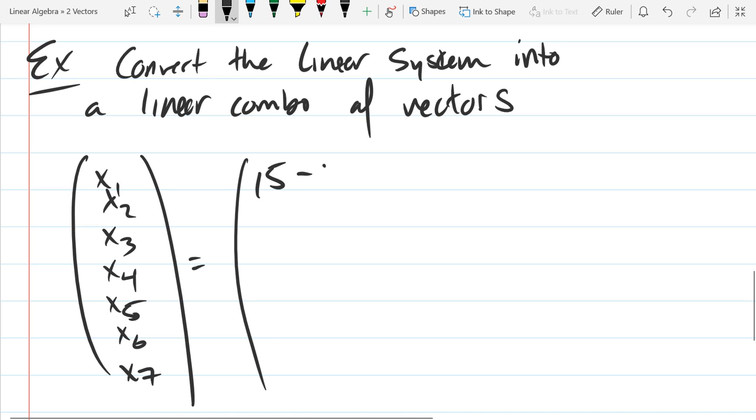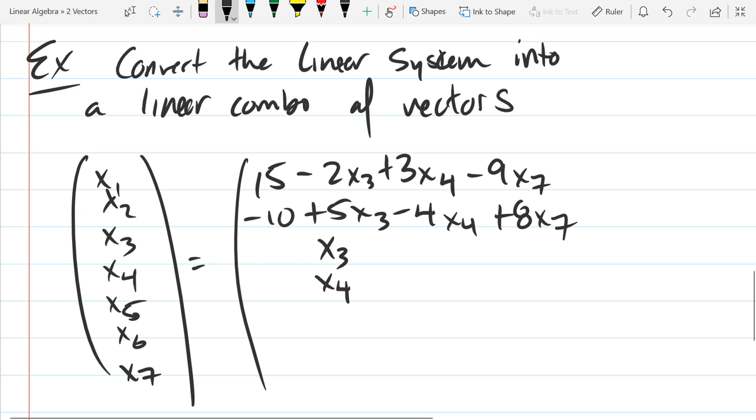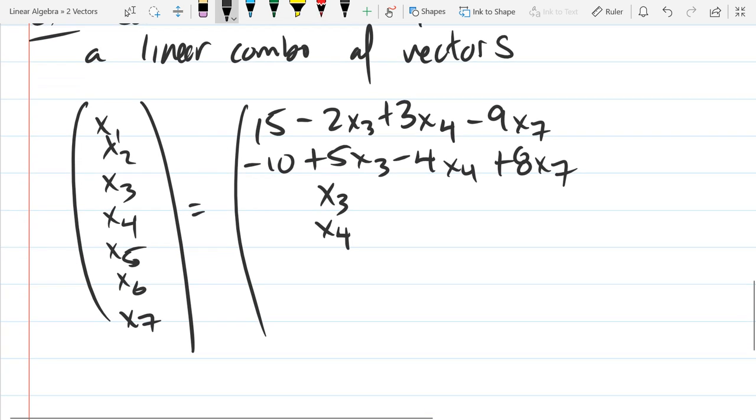Our first will be 15 minus 2x3 plus 3x4 minus 9x7. Second, this will be x2 equation, negative 10 plus 5x3 minus 4x4 plus 8x7. I'm saying them as exponents, but writing them as subscripts. So x3 is just x3, x4 is just x4. The fifth row will be 11 plus 6x7. And x6 is negative 21 minus 7x7. And last, x7 is just x7.